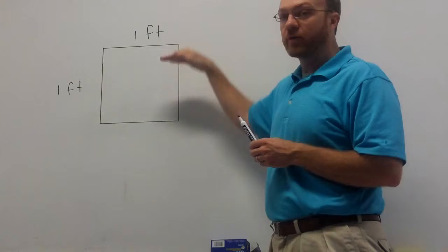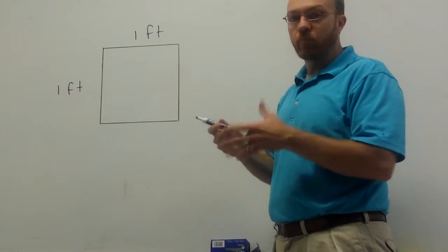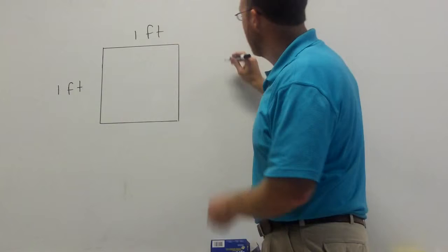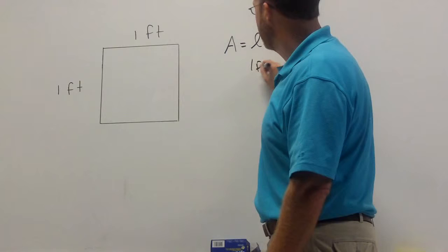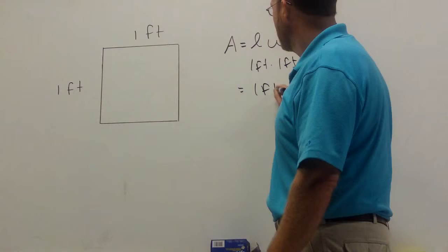So here on the board, I have a picture of a square. It's one foot on each side. Therefore, the area is one square foot. Now remember, we can find our area by doing a length times the width. So one foot times one foot is one square foot, one foot squared.